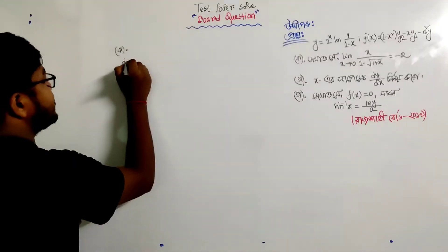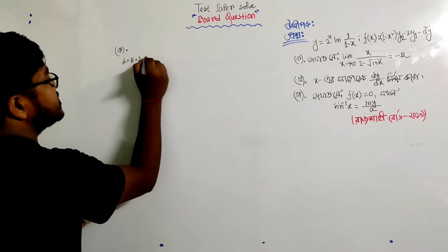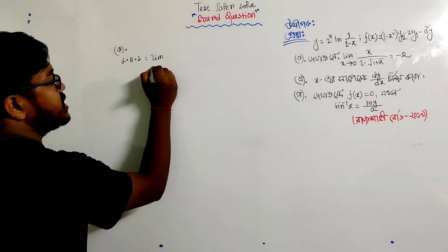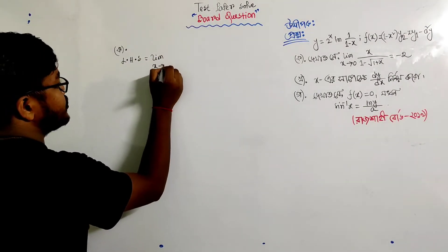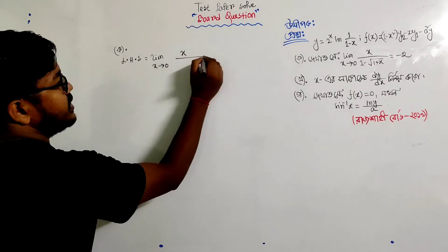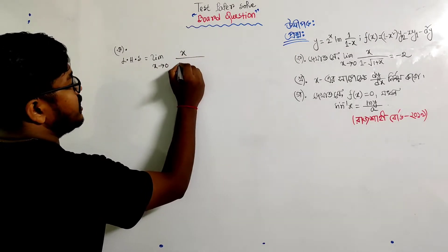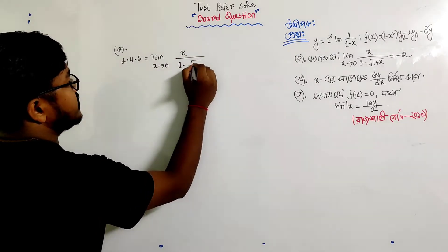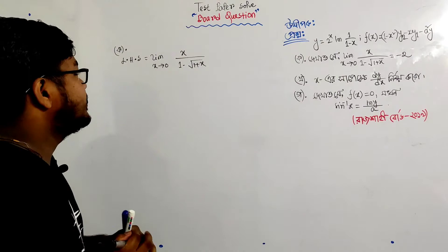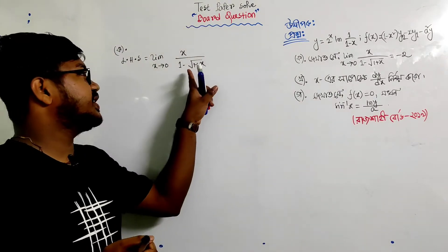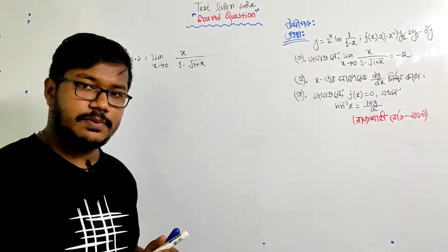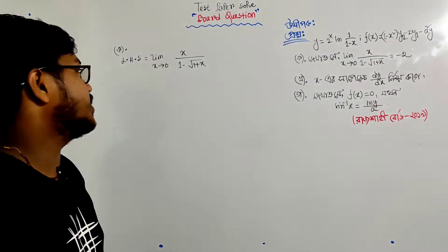The left hand side is the limit as x tends to 0 of x divided by the square root of 1 minus root of 1 plus x.